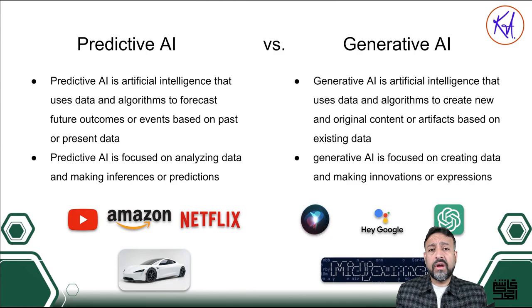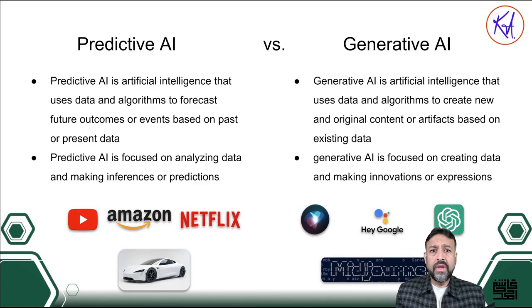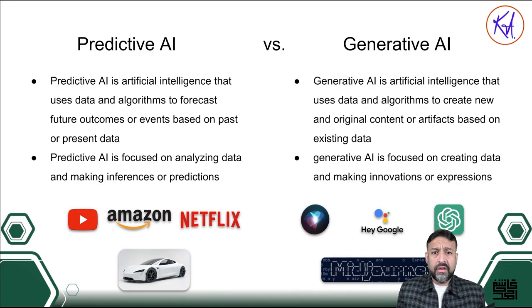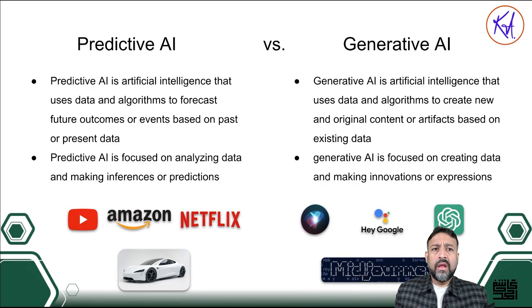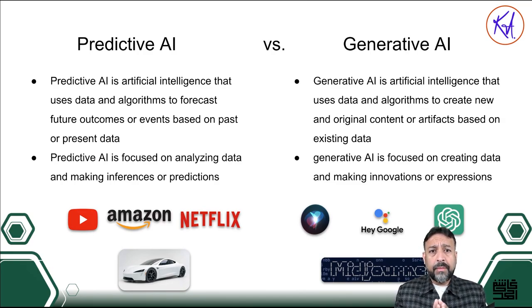Generative AI also uses data and algorithms, but it creates new and original content based on existing data. It can generate insights and summaries — for example, taking a whole article and generating a summary. It can personalize search results or power a bot assistant that understands your query and talks to you in a more human way. It can generate art, images, chats, audio, videos, and more. It can have a real conversation with you where it wouldn't feel like you are talking to a computer. So both predictive and generative AI use LLMs but in two different ways — they have different use cases but both rely on the power of large language models.